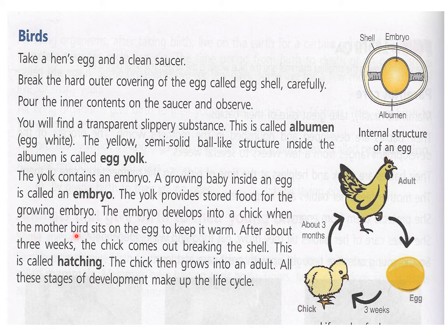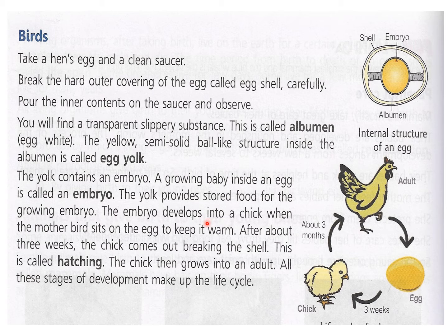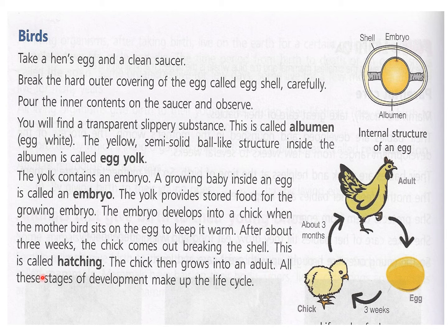The embryo develops into a chick when the mother bird sits on the egg to keep it warm. When the hen sits on the egg, only then does the embryo develop into a chick. If the hen does not sit on the egg to keep it warm, the embryo will die and will not develop into a chick. So it is very important for the mother hen to sit on the egg. After about 3 weeks — that is 21 days — the chick comes out by breaking the shell. This is called hatching.